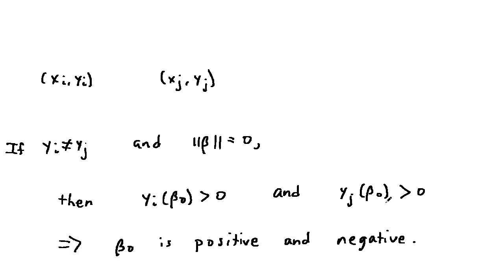If yi is not equal to yj, so that we have two different classes, and the norm of beta is 0, then we have that beta 1 through beta p is 0.